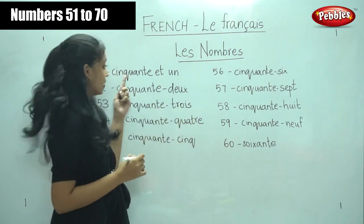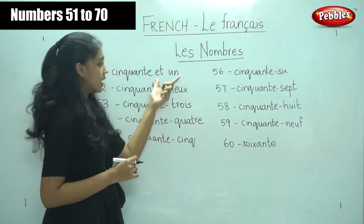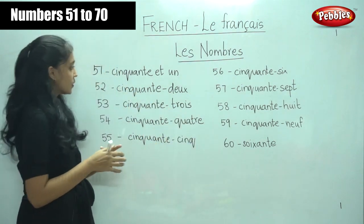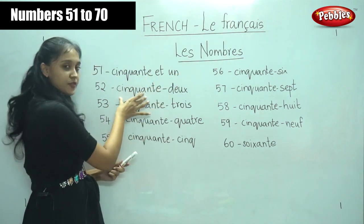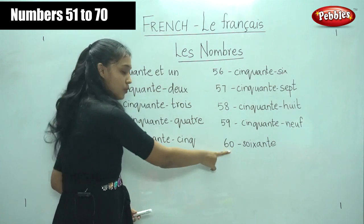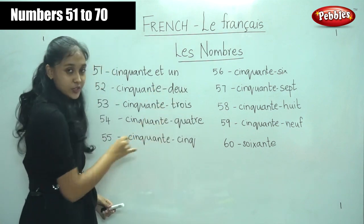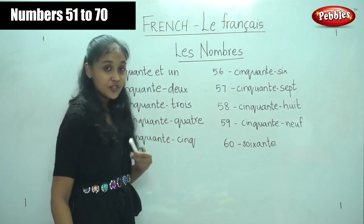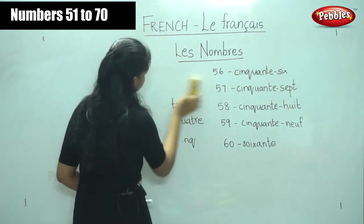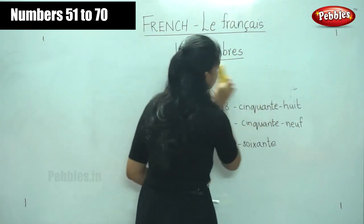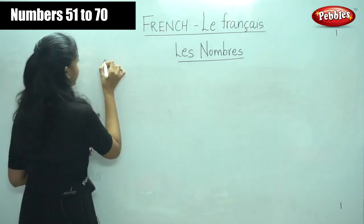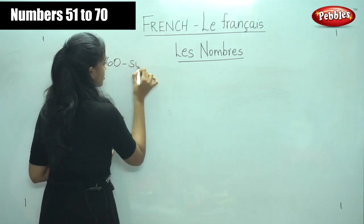Now, just like number fifty — if you know number fifty and numbers one to ten, it is very easy to write numbers fifty-one to fifty-nine, because we write cinquante and then one, two, and so on. Similarly, for sixty-one to sixty-nine, if you know the word for number sixty and numbers one to ten, it is very easy to write. So try writing it along with me. First we will write for sixty — for sixty it was soixante.